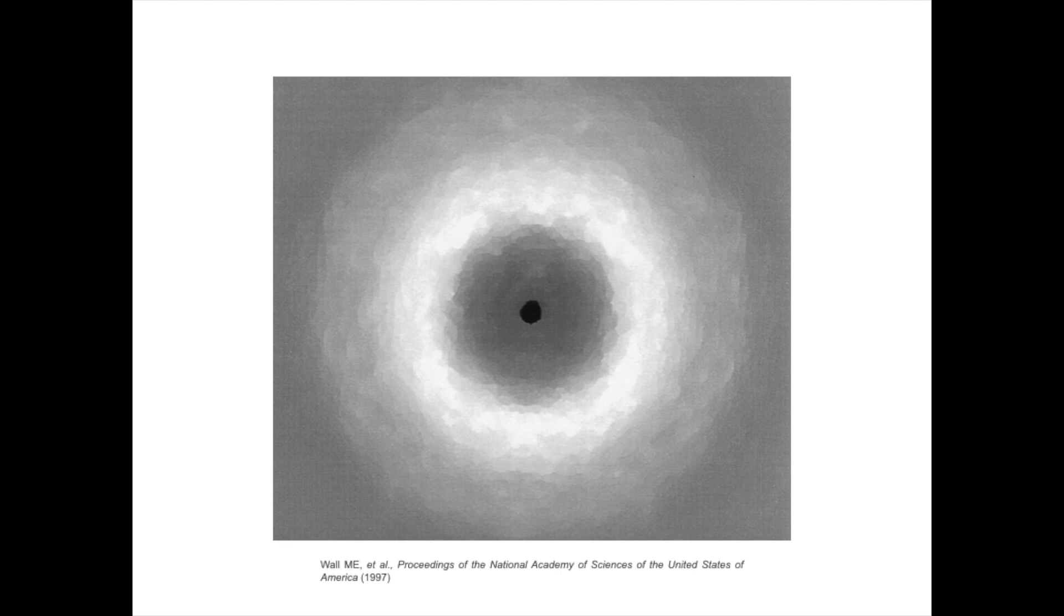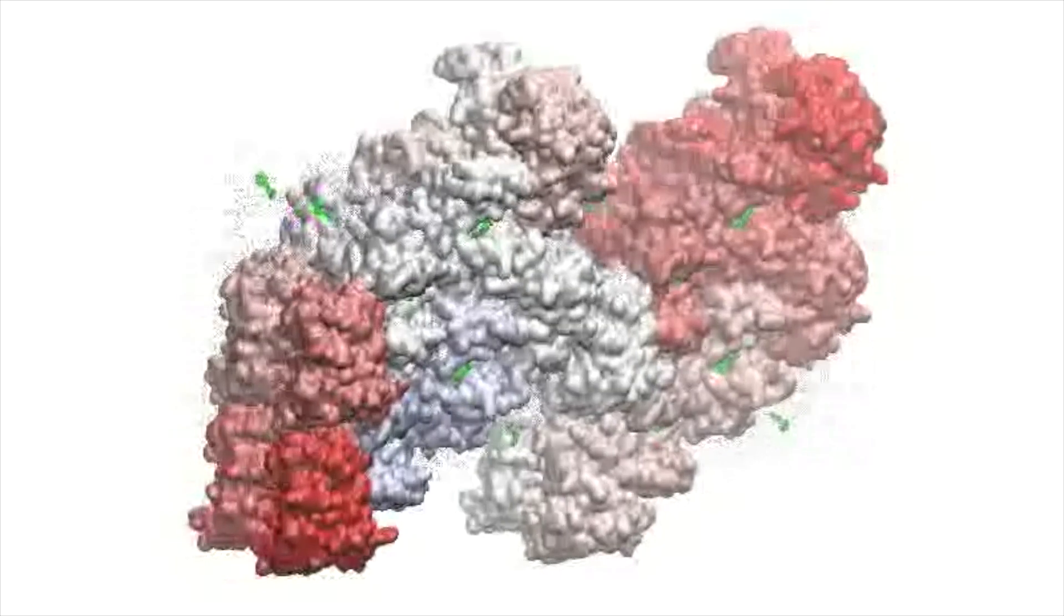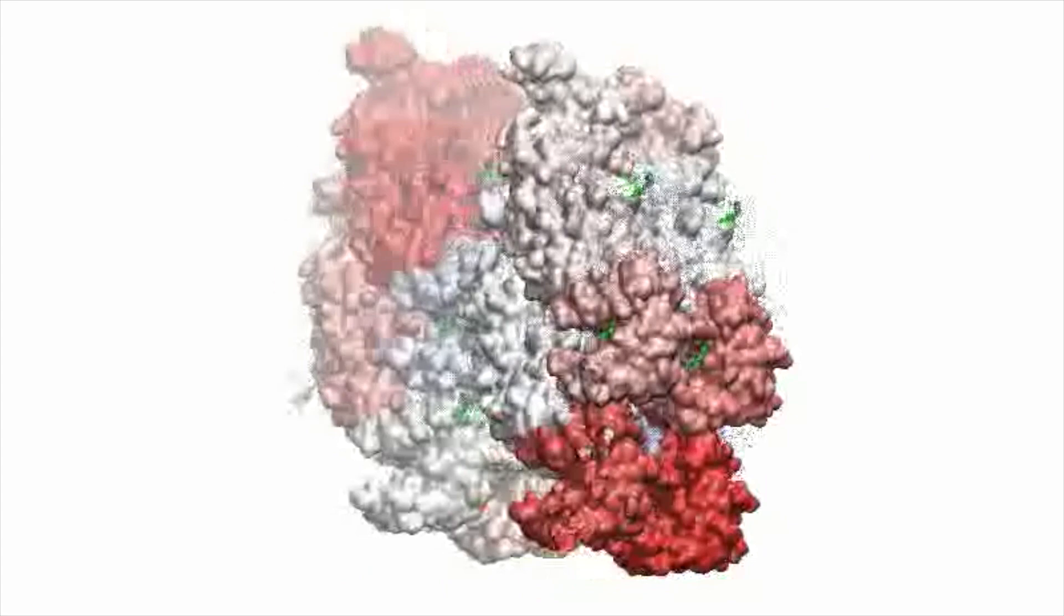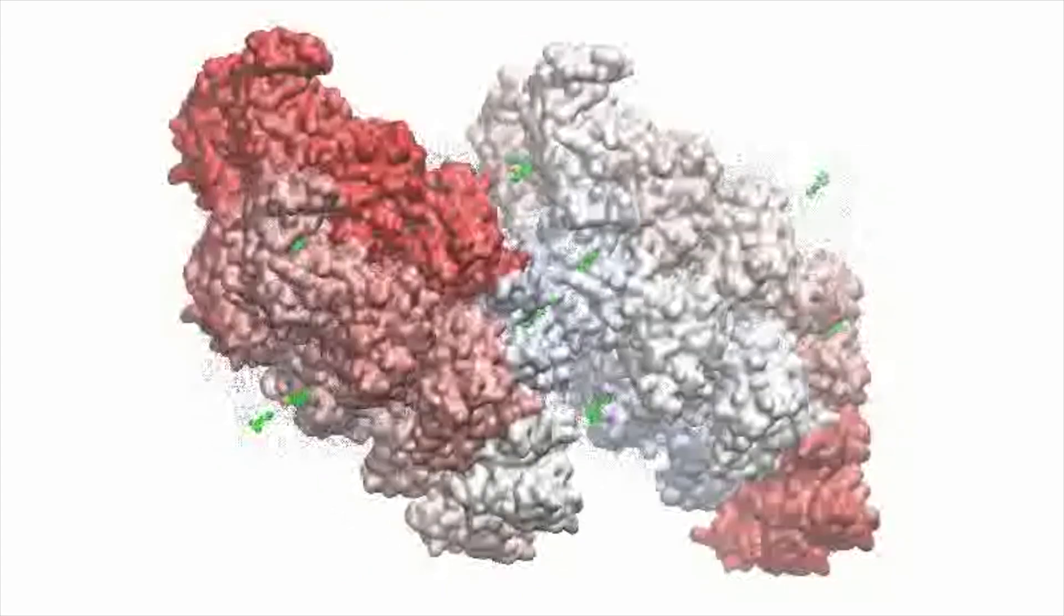One way to figure out how to get information out of the diffuse signal is to simulate the protein crystal and the process of shooting x-rays through it and see how well we can reproduce the signal we see in experiments.